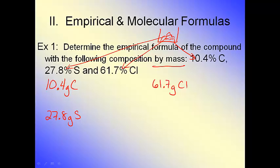Had they said the sample was 252 grams and 10.4% is carbon, then we'd have to do some mathematical conversion. But since they don't tell us the total, we assume 100 grams to make life easier. Now, can we compare things in grams? No — because we need the smallest whole number ratio of atoms in a molecule, and atoms are individual counts, not grams.